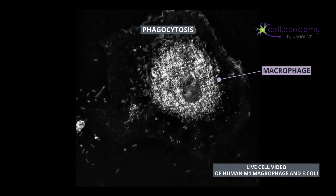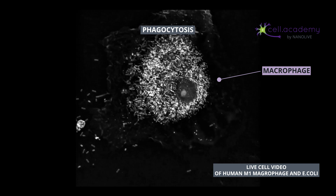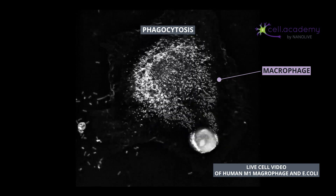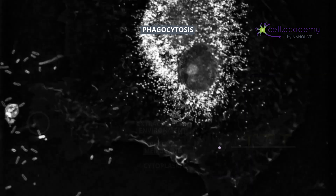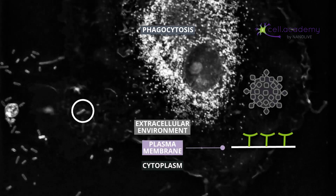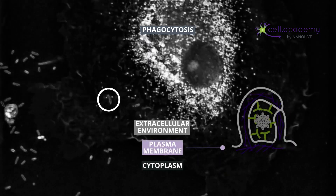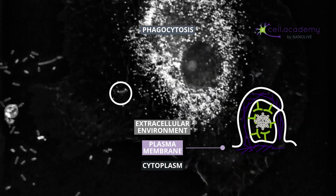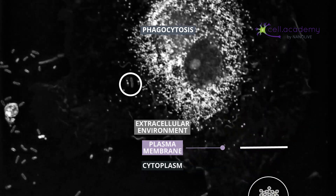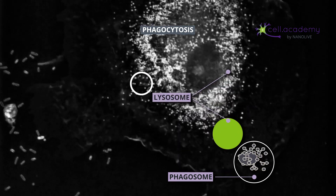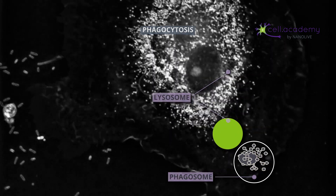Larger particles, such as microbes, bacteria, and cellular debris, are internalized in a process called phagocytosis, which you can consider as cell eating. While pinocytosis is performed by almost all cellular types, phagocytosis is pretty much limited to immune cells, like macrophages. During this process, particles are recognized by membrane receptors and internalized in structures called phagosomes. The content is later digested by the enzymes provided in the fusion of phagosomes with lysosomes.